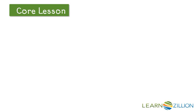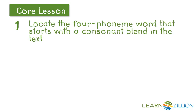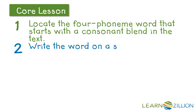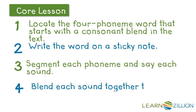These are the steps to use to decode a word like this. First, find the four-phoneme word that starts with the consonant blend in the text. Then write the word on a sticky note. Next, segment each phoneme in the word, and then blend each sound together to read the word.